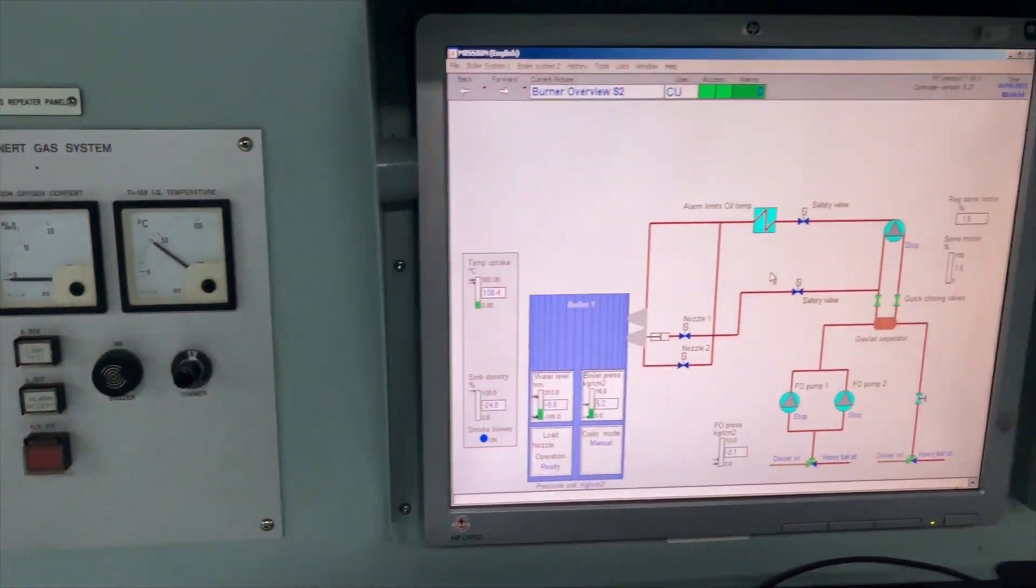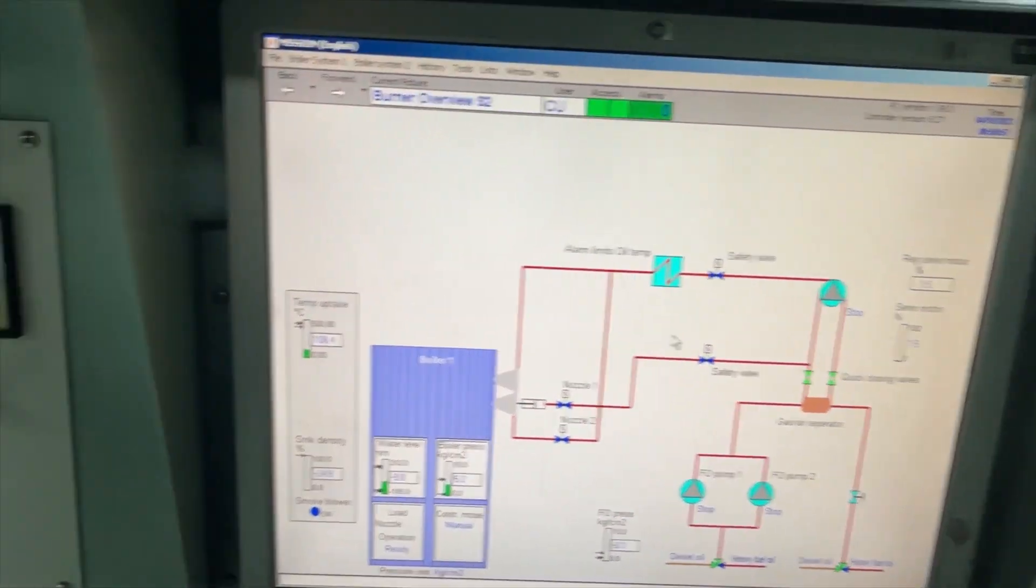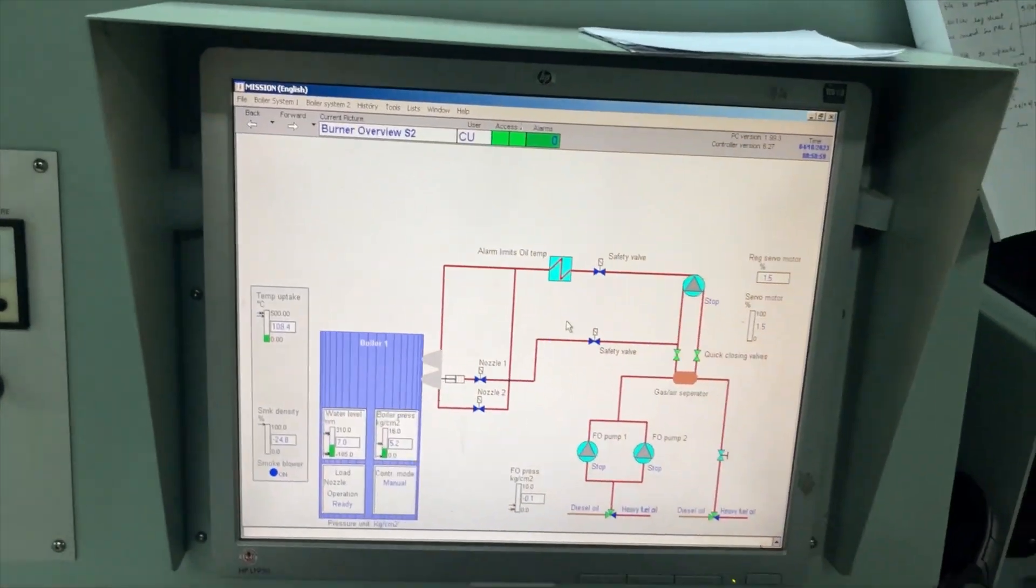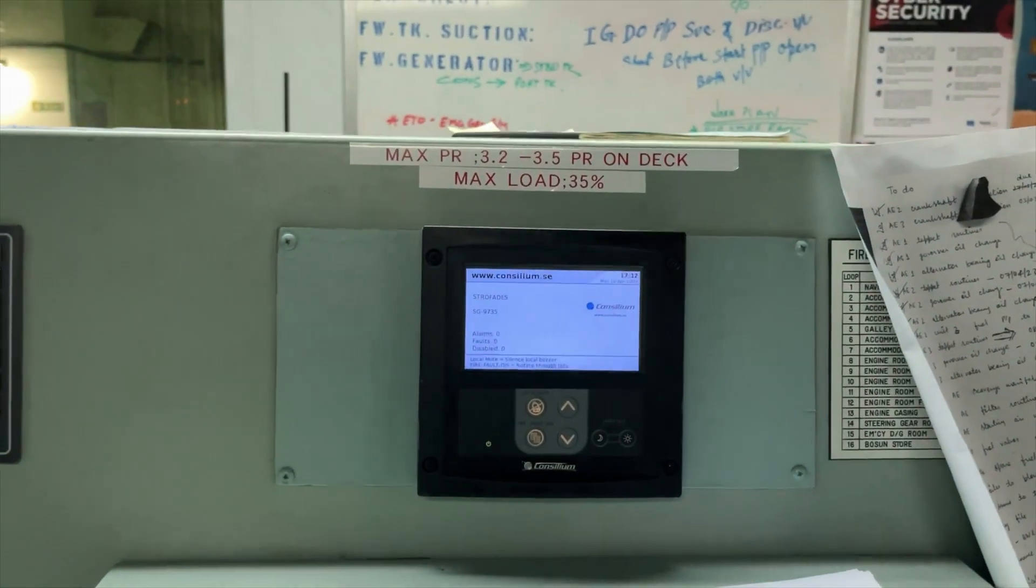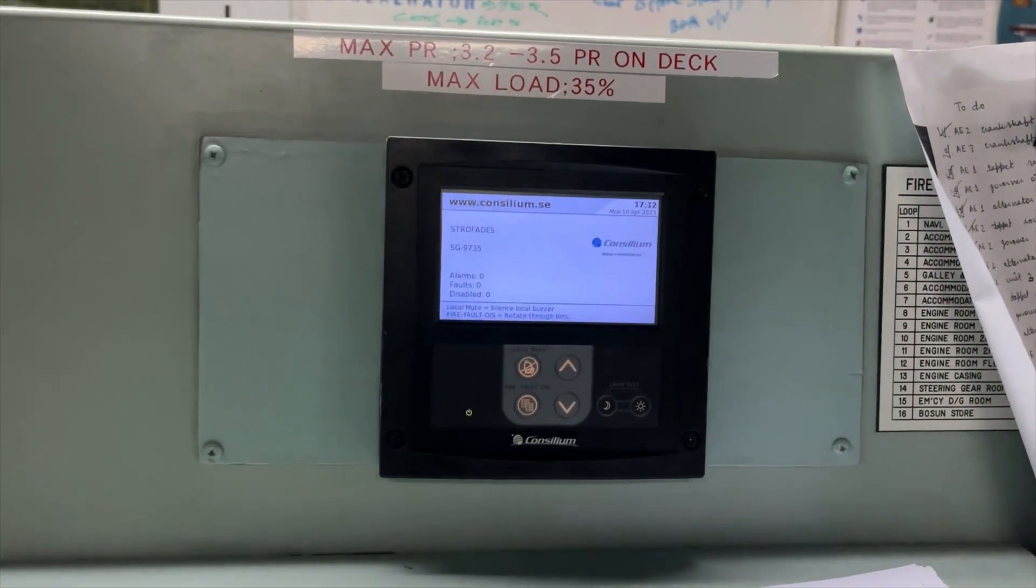And this is your boiler panel. Auxiliary boiler. And this is your repeater for fire alarm system.